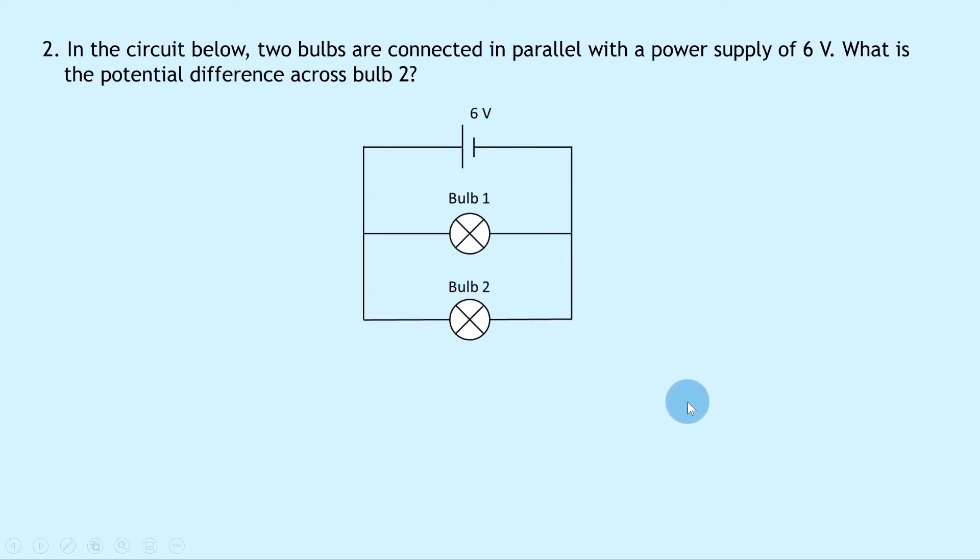To answer this we need to know the circuit rule for voltage or potential difference in a parallel circuit. In a parallel circuit, the voltage across each branch is equal to the voltage of the supply.